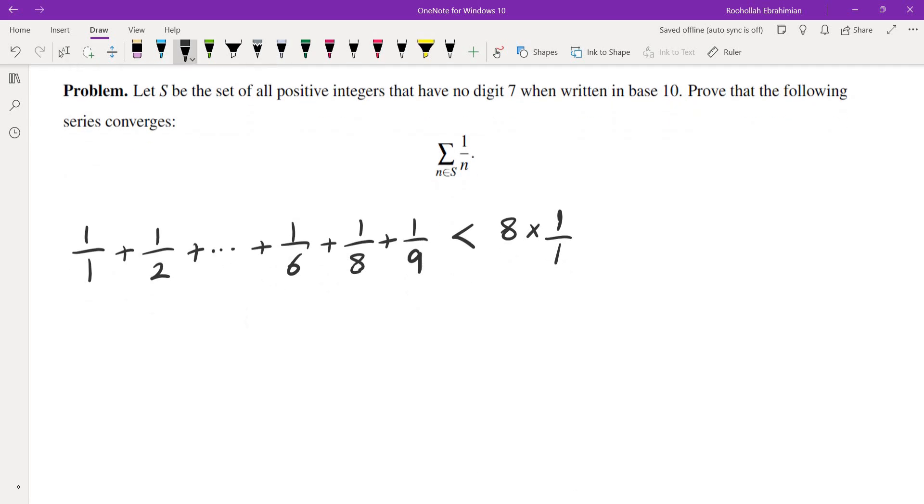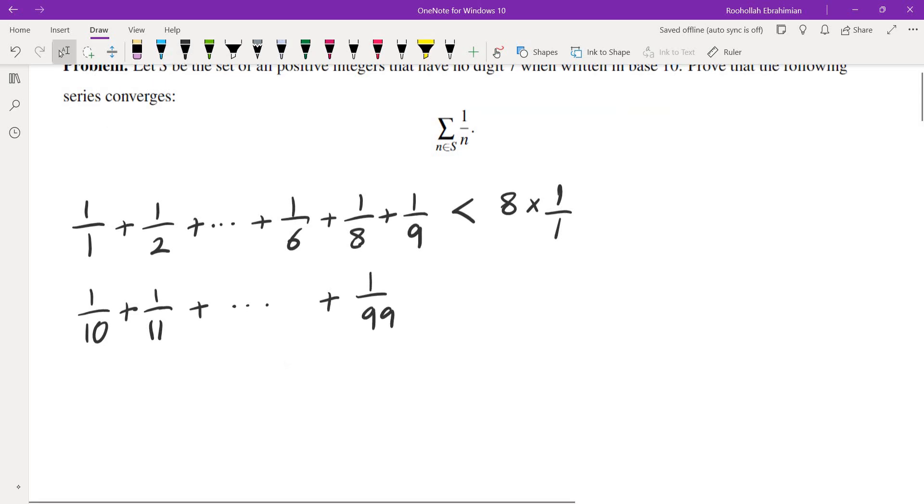If you look at the sum of the numbers with two digits, we start from 1 over 10, 1 over 11, and we get to 1 over 99. So all of them are less than 1 over 10. How many of these do we have? We have two digits A and B. The first digit could be any of the numbers 1 through 9 except for 7. So 1, 2, 3, 4, 5, 6, 8, and 9.